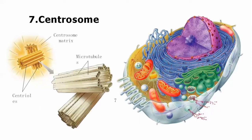The other organelle is centrosomes. Centrosomes are located near the nucleus. The centrosome is composed of two centrioles that are present perpendicular to each other. These centrosomes are composed of microtubules, and these microtubules are involved in the formation of spindle fibers during cell division. When the cell divides, these microtubules form the spindle fibers on which the chromosomes are aligned for the process of division.